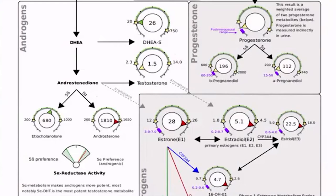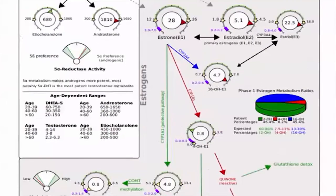When Dutch reports their hormones, they have a series of different reference ranges — pre and post-menopausal reference ranges and male and female reference ranges. It's important to be familiar with those when you're working with someone. They also report the breakdown products of hormone metabolism, which I think is helpful as well.